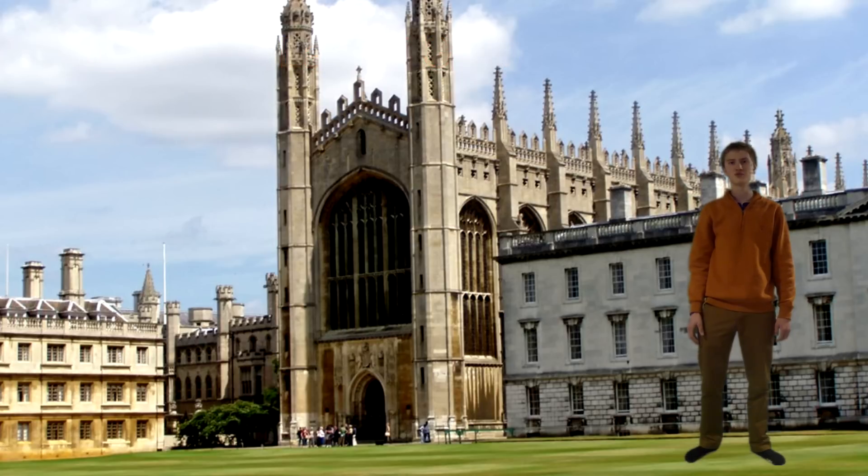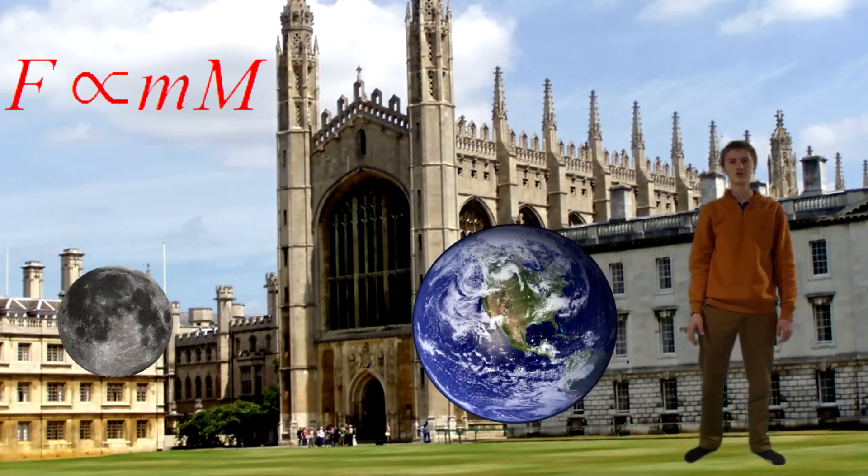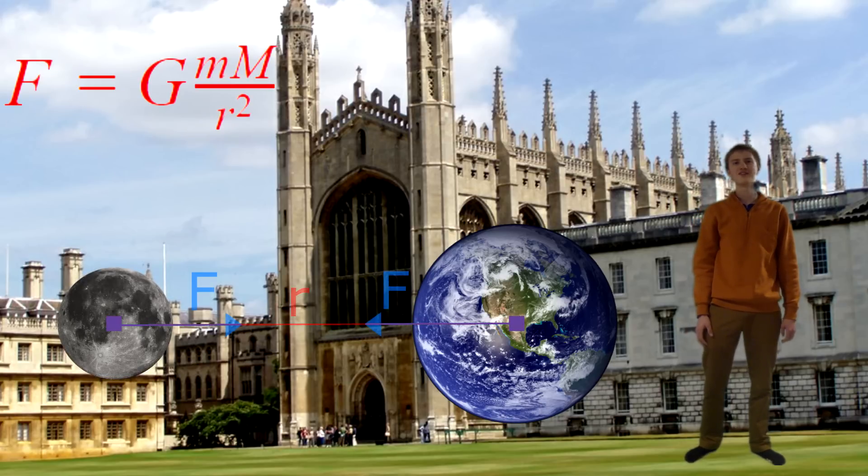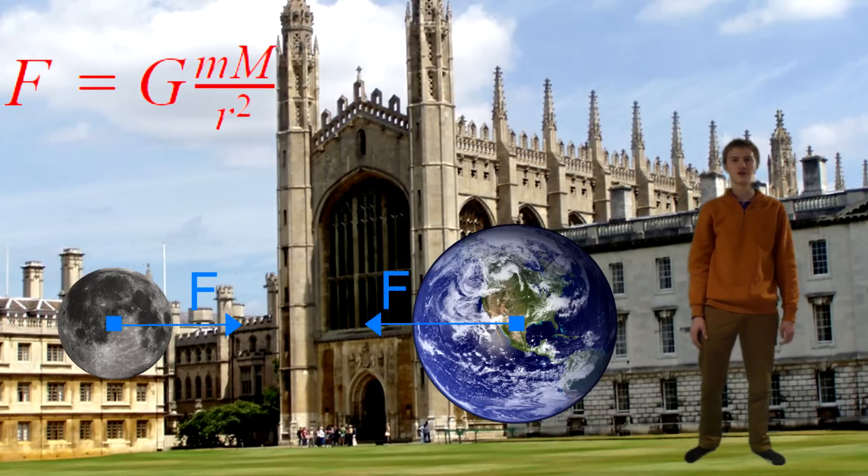He explains that the gravitational force between two masses is proportional to the product of the two masses and inversely proportional to the square of the distance between them. This can be written as the equation F equals G m1 m2 over r squared, where G is the gravitational constant 6.67 times 10 to the negative 11th.